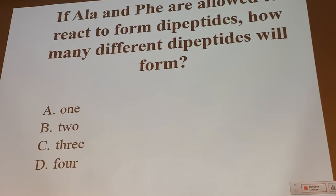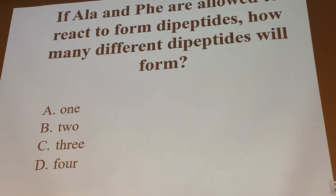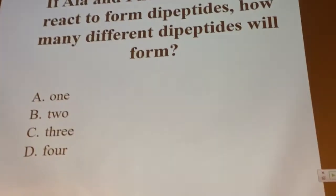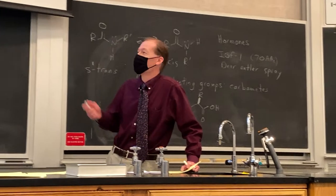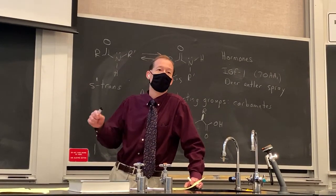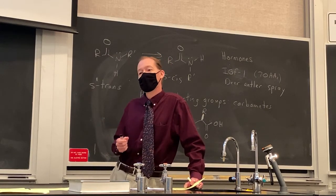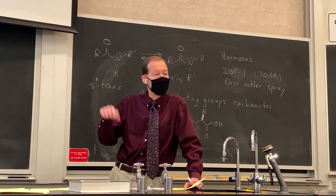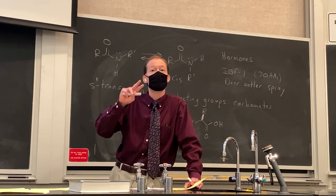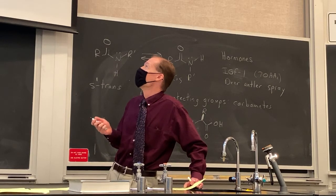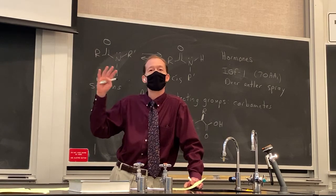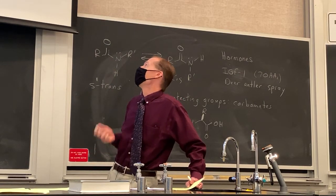The answer is four. You could get homodimers of each one — the amine of one alanine could react with the carboxylate of another alanine, and same with phenylalanine. And we learned at the beginning of class that when you have a mixed dipeptide between two different amino acids, there are two constitutional isomers — alanine at the N-terminus and phenylalanine at the C-terminus, or the reverse. So there's a total of four different dipeptides you would get.